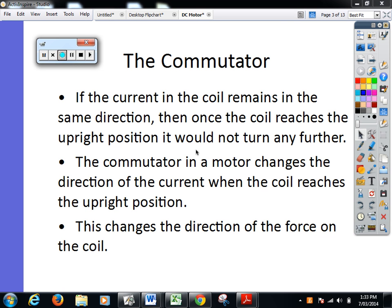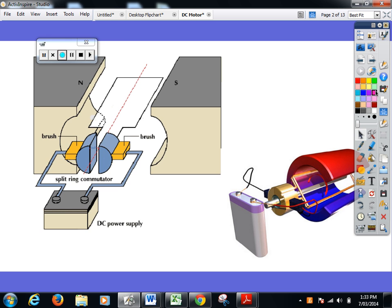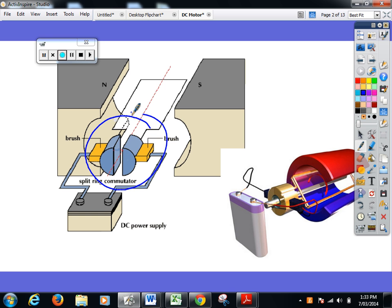Yesterday we ended off having a look at a working DC motor, focusing on this very special device called the commutator. We will eventually meet two different types of commutators in the course. This one here is called the split-ring commutator.